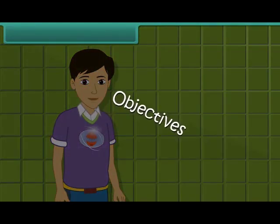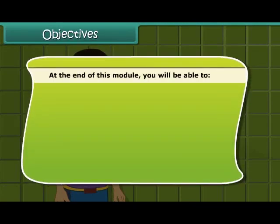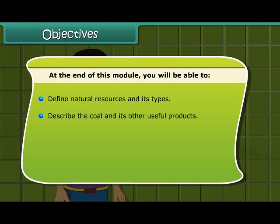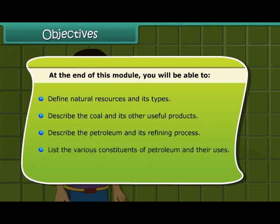Objectives: At the end of this module, you will be able to define natural resources and its types, describe coal and its other useful products, describe petroleum and its refining process, list the various constituents of petroleum and their uses, and describe natural gas and its importance.